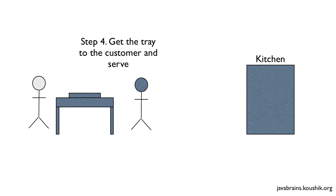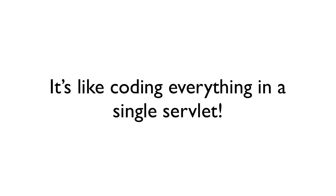This could get tricky if there are multiple customers. Once the restaurant becomes a hit and lots of customers come in, it would not be possible for one person to manage all these steps on his own. Our stick man anticipates this problem and is really worried. He happens to have a friend who is a Java programmer, so he gives him a call and explains that he has to do all four steps for each customer over and over again.